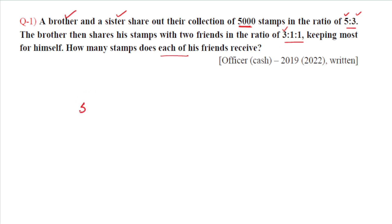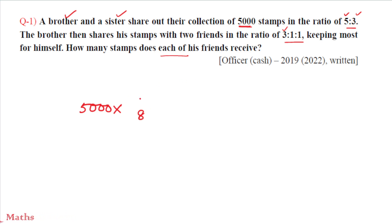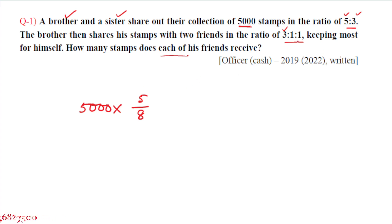First, from the total 5,000 stamps, we distribute between brother and sister in the ratio 5 to 3. The total ratio is 8 parts, so the brother gets 5 out of 8. That gives the brother 5 by 8 of 5,000 stamps. Then the brother shares with his friends in a 3 to 1 to 1 ratio. Each friend gets 1 part out of a total of 5 parts.